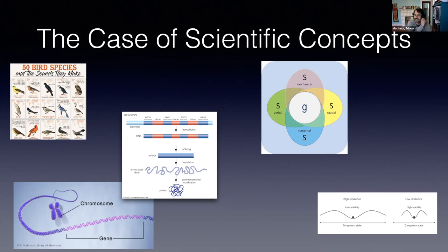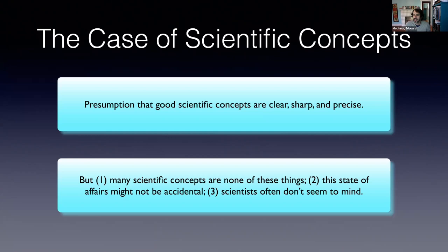Looking at who was attending, I saw that Neto, who wrote one of the nice case studies bearing on today's topic, was in the audience. Scientific concepts are also a good target because there is a common presumption that good scientific concepts are clear, sharp, and precise — that it's a mark of good scientific thinking to develop concepts that have sharp boundaries, determinate implications, and that don't confuse the phenomena they are about.